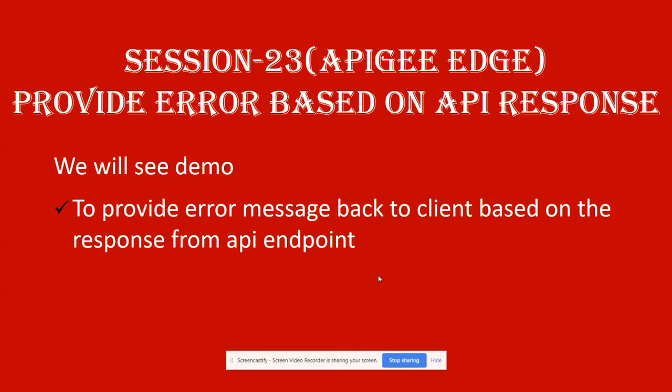This is session 23 of the Apigee Edge course for beginners. In this session we will see a demo to provide appropriate error messages back to the client application based on the response from a backend endpoint. This is a continuation of our previous session, so if you haven't watched session 22, I would strongly recommend you watch it before proceeding.